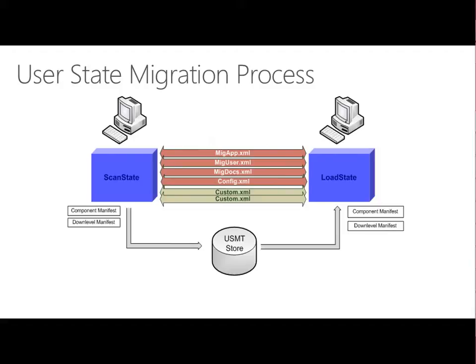The migration process has two different parts to it. It has scan state to do our capture, and it has load state to push the information back down again. Traditionally with USMT, the store is somewhere else — not generally on the local box. It might be stored across a network location or on a USB disk. If that's the case, we've got to take all the data on the machine and copy it somewhere else, requiring bandwidth, time, and storage space. What we capture and push down is controlled by all of our XML files.